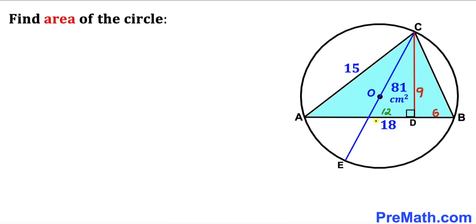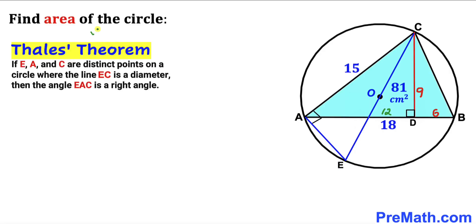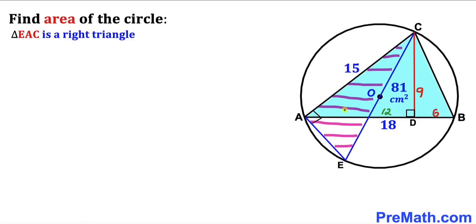I have drawn diameter CE passing through center O, and then connected point E with point A. Now let's recall Thales' theorem: if E, A, and C are three distinct points on the circle where EC is a diameter, then angle EAC is a right angle. In our diagram, EC is a diameter, so angle EAC is 90 degrees, meaning triangle EAC is a right triangle.